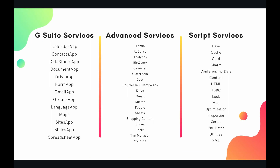So there are three main buckets of services. Over on the far left you have your G Suite services. These you'll use the majority of the time — probably 90% of use cases, one of these services is going to be used in your app. We have things like the Calendar app, which lets you access Google Calendar, Gmail, and the Spreadsheet app with Sheets. A lot of these are direct connections to your G Suite applications and you'll be using these all the time.